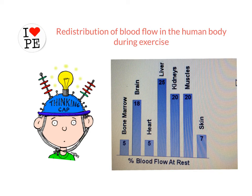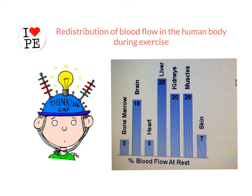This short video looks at the redistribution of blood flow in the human body during exercise. Before discussing exercise, we look at what percentage blood flow is at rest. As shown in the bar graph, there is a distribution of blood around the human body across seven areas. The brain, liver, kidneys, and muscles receive a greater blood supply, while bone marrow, heart, and skin receive lesser amounts.